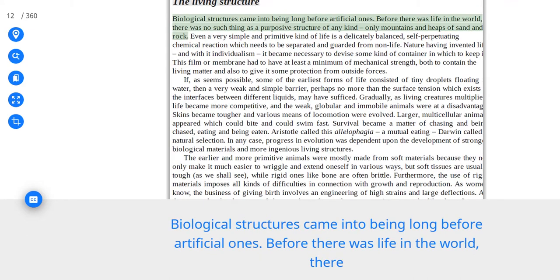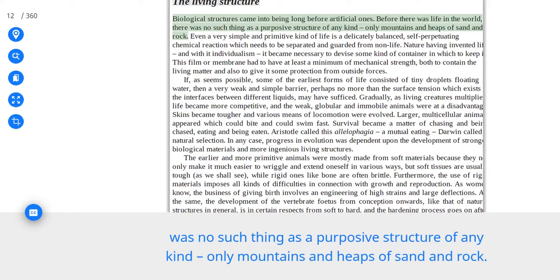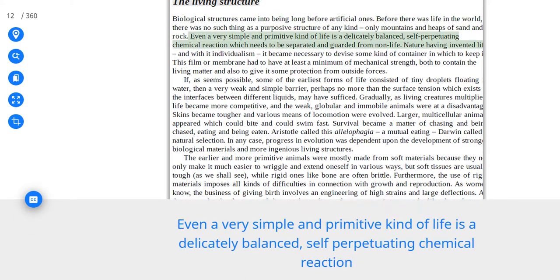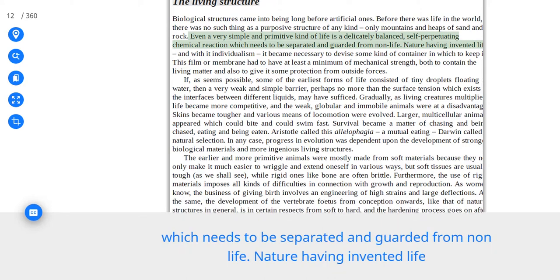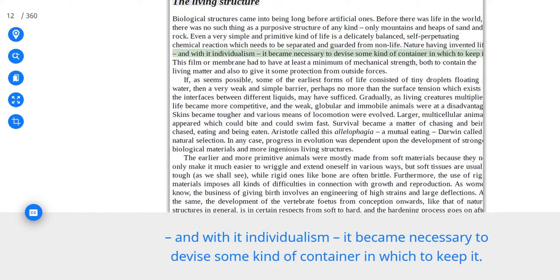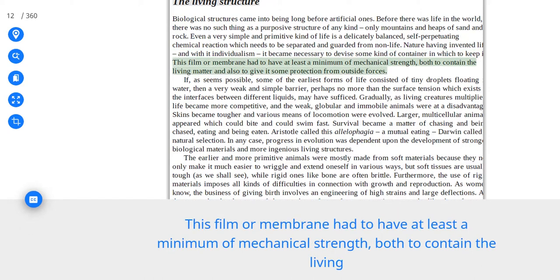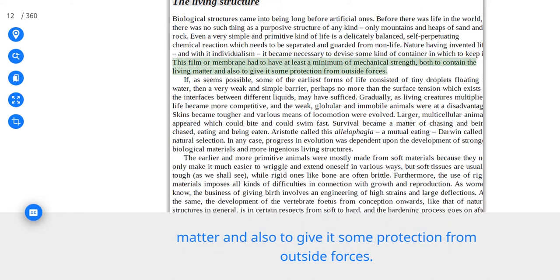We shall discuss the ways in which the need to be strong and to support various necessary loads has influenced the development of all sorts of creatures and devices including man. Biological structures came into being long before artificial ones. Before there was life in the world, there was no such thing as a purposive structure of any kind, only mountains and heaps of sand and rock. Even a very simple and primitive kind of life is a delicately balanced, self-perpetuating chemical reaction which needs to be separated and guarded from non-life. This film or membrane had to have at least a minimum of mechanical strength, both to contain the living matter and also to give it some protection from outside forces.